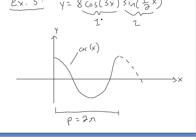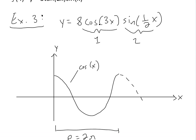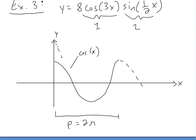Now if we look at 8cos(3x), this 8 doesn't affect the period — it just makes the graph either higher or lower, stretching it vertically. The period will not change. You can see my earlier video, links below. So now all we have to do is see what the period would be with this 3x.